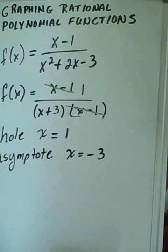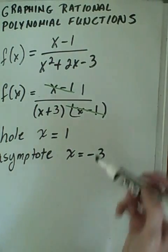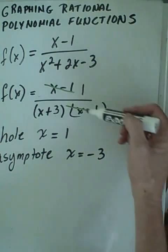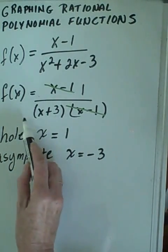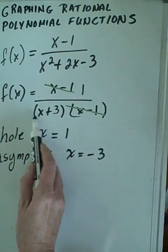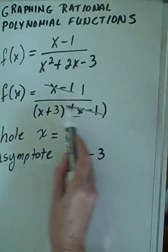An asymptote is a vertical line, like an imaginary vertical line on the coordinate plane, that the graph cannot cross. So remember these two things: we can find holes by terms that cancel, and we find asymptotes that are the values where the denominator is 0.